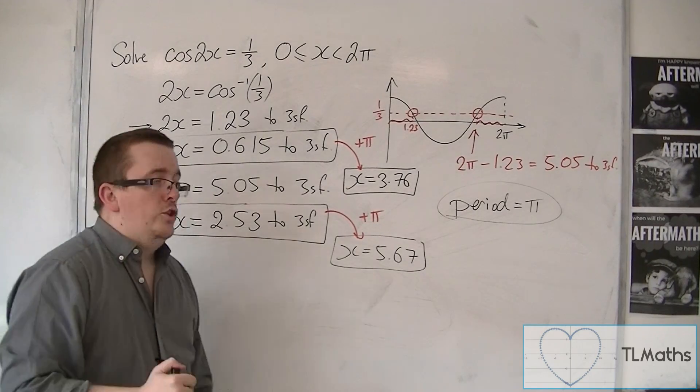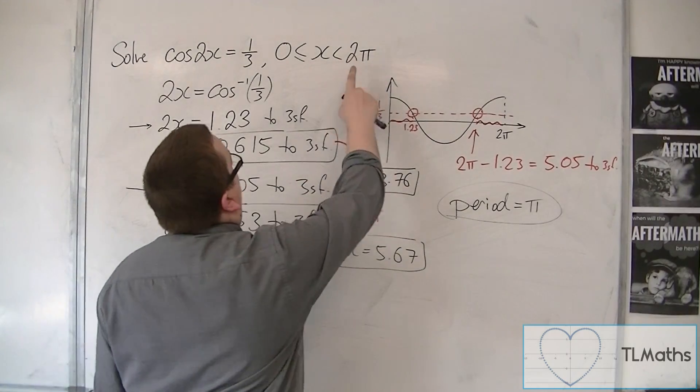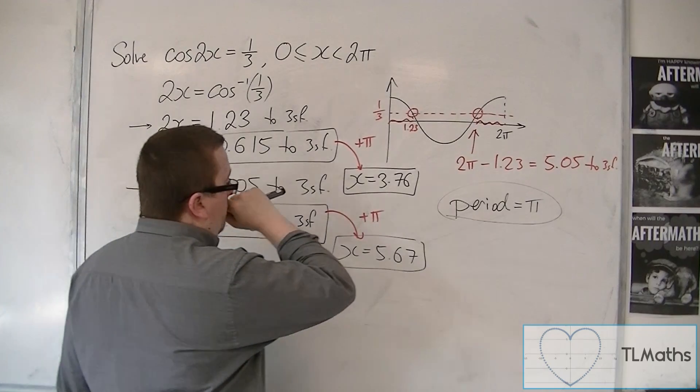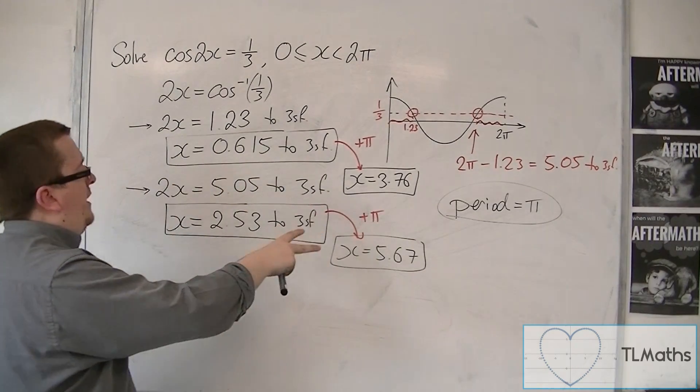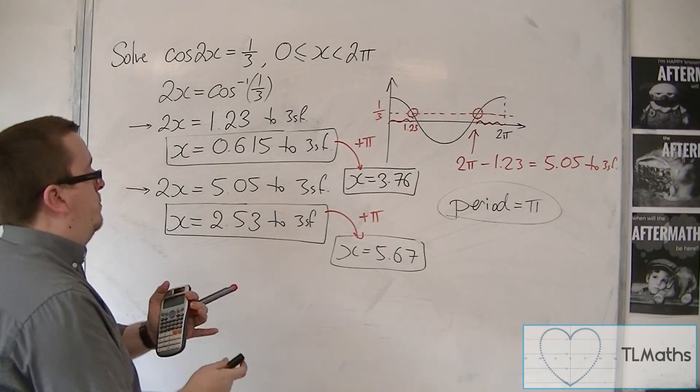So make a check that none of your answers have gone beyond the range. 2 times pi is a little over 6. So your four answers here are between 0 and 6, so they're between 0 and 2 pi.